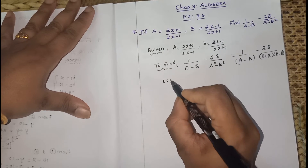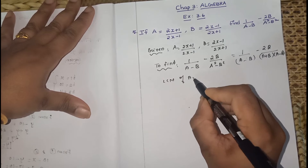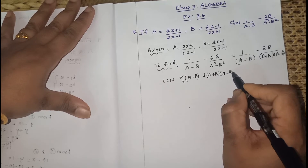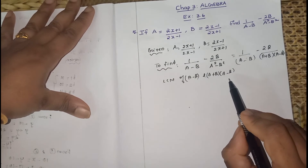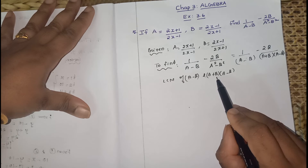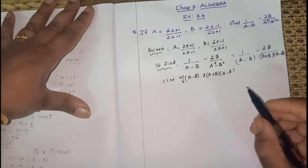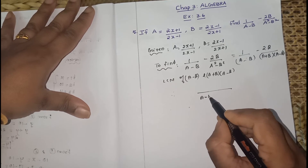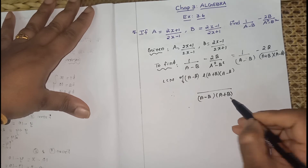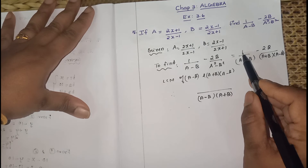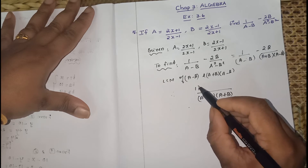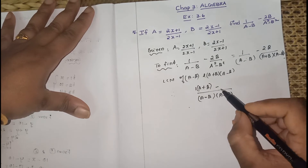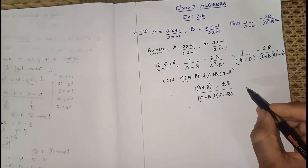The LCM of (A-B) and (A+B)(A-B) — since A-B is already there, take it once, and A+B is also present so take that as well (common as well as uncommon). Therefore the LCM is (A-B)(A+B). On the numerator: 1 is there but we don't have A+B, so 1 times (A+B) minus 2B as it is.